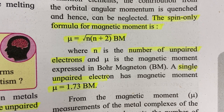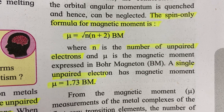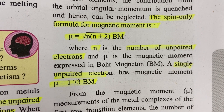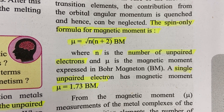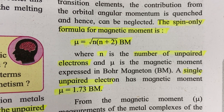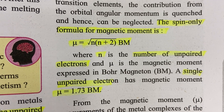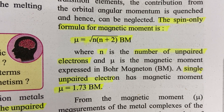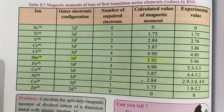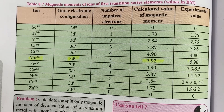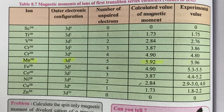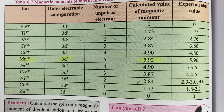The spin-only formula for magnetic moment: the effective magnetic moment is calculated using the formula μ = √(n(n+2)) BM, where BM stands for Bohr magneton. For a single unpaired electron, the value is 1.73 BM. For Mn²⁺, there are 5 unpaired electrons in 3d orbitals, so the calculated value of magnetic moment is 5.92 BM.